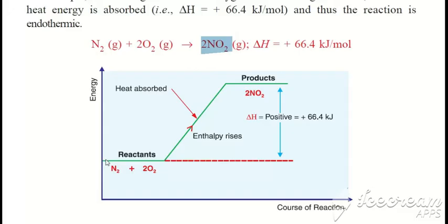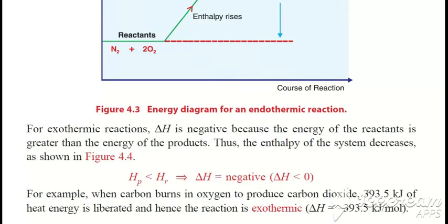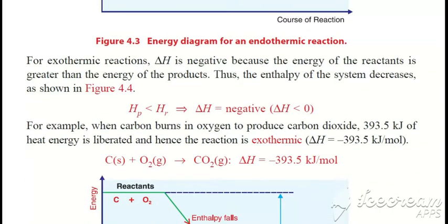Nitrogen and oxygen gases absorb heat. The reactants are at a lower temperature. The heat energy is shown on the y-axis and the course of reaction on the x-axis. Heat is absorbed to form nitrogen dioxide, showing the energy diagram.